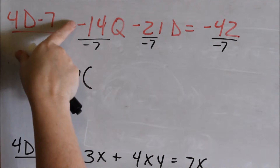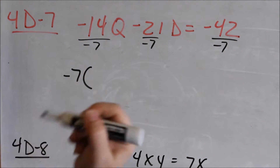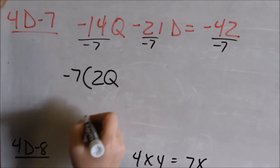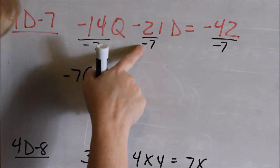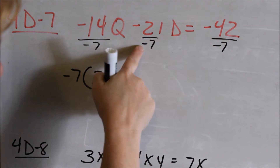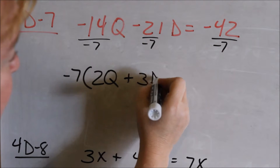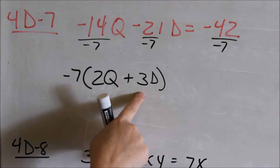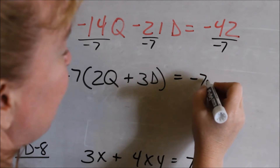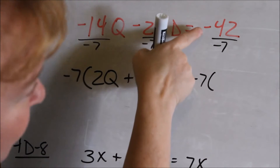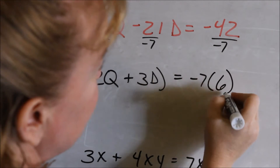If I'm going to factor out a negative 7, I write my negative 7 in front of my parentheses. Negative 14 divided by negative 7 is a positive 2, and then my Q — that's what I have left. Negative 21 divided by negative 7: a negative divided by a negative is a positive, and 21 divided by 7 is 3, and there's my D. On the right side, negative divided by negative is positive, giving a positive 6.